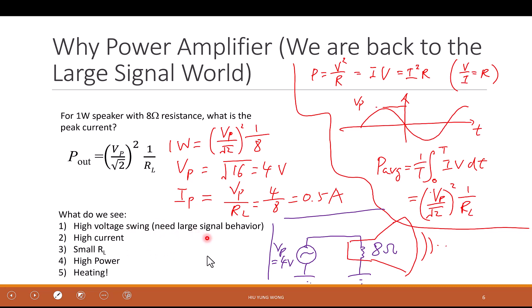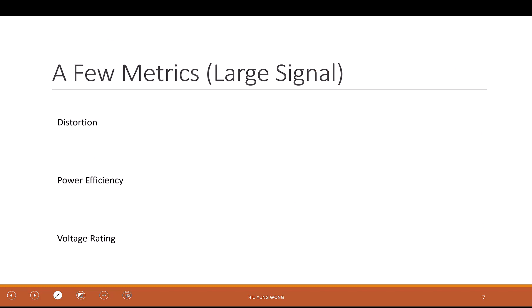This is completely different from what we saw before. First, high voltage swing — so you definitely need a large signal model, you cannot use the linear small-signal gm approach. Second, high current — so it is going to heat up your device. Third, very small load impedance — before we assumed infinite input impedance, but this one is very small, so it behaves more like a current load. High power and heating apply not just to speakers, but to electronics in a Tesla or any electric car, and even RF transmitters.